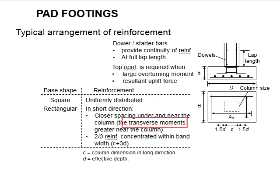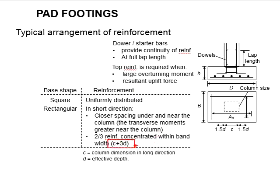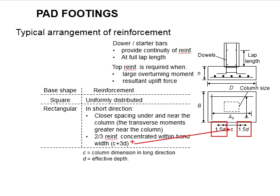As the transverse moments are normally greater near the columns, two-thirds of the reinforcement bars will concentrate within the bandwidth of C plus 3D. C represents the column dimension in the longer direction, while D represents the effective depth of the reinforcement bar. The 3D here accounts for one D from one side and another one D from the other side. That means two-thirds of the reinforcement bars should concentrate within the regions at this range.